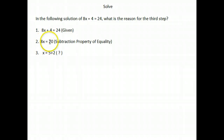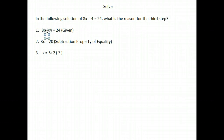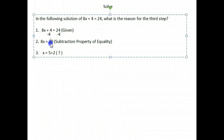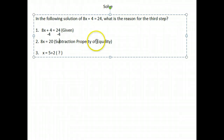The next step we end up with 8x equals 20. How did we get there? Well, the next logical step when solving this equation is to subtract 4 from both sides. That's what we did — we subtracted 4 from both sides, which left us with 8x on one side and just 20 on the other. Our reason — why we could do that — is the subtraction property of equality, which allows us to subtract the same number from both sides.